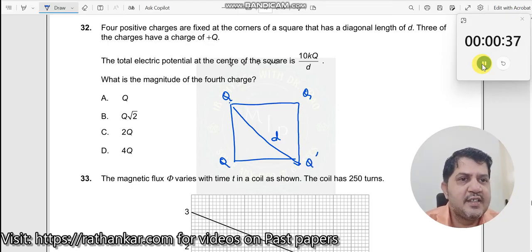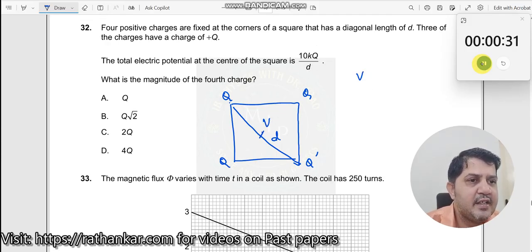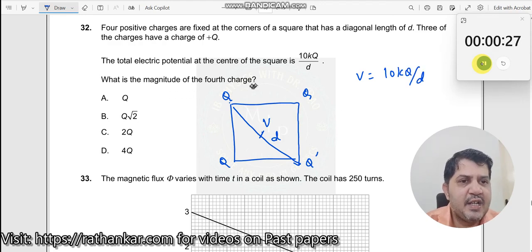Then the total electric potential at the center of the square is 10kq by d. At this point it is 10kq by d. I will write V is equal to 10kq divided by d. What is the magnitude of the fourth charge? That is what the question asks.